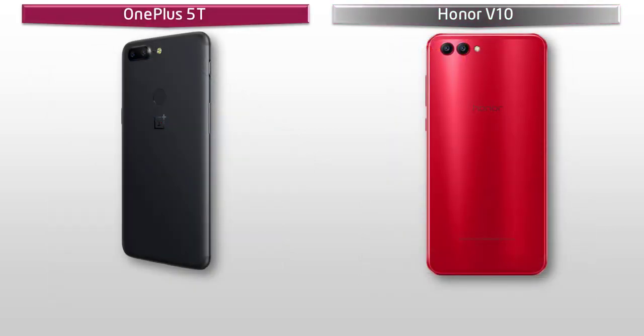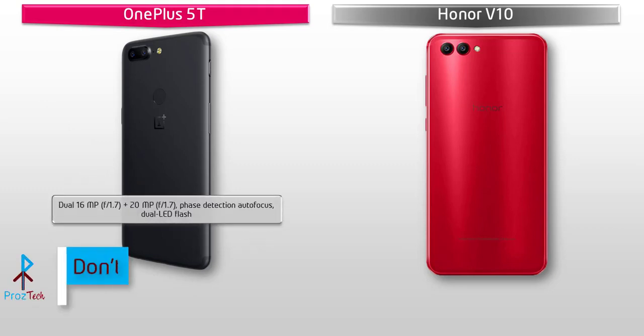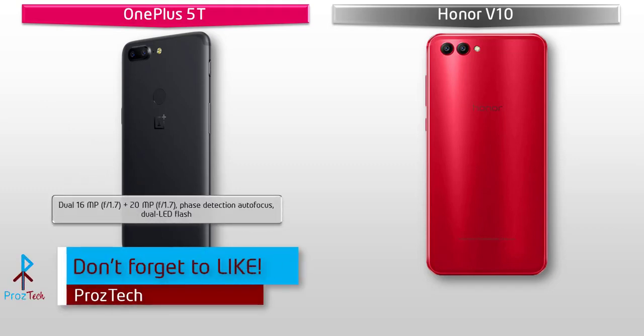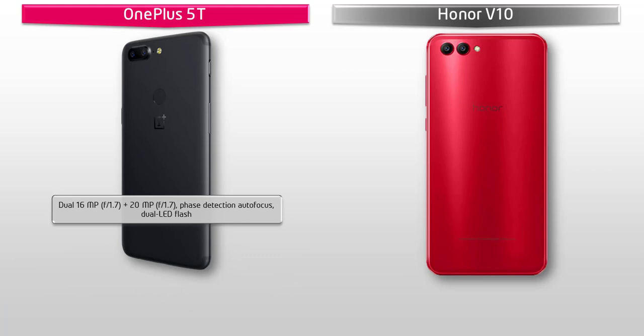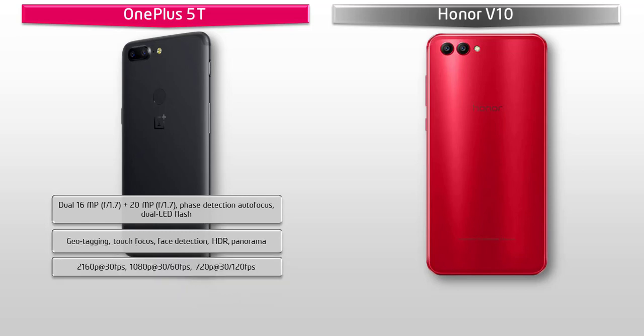About the camera, the OnePlus 5T comes with a 16 megapixels plus 20 megapixels Sony primary camera with f/1.7 aperture, autofocus, and dual LED flash, 1.6x optical zoom, geotagging, touch focus, face detection, panorama, and HDR. It can shoot video at 2160p at 30 fps, 1080p at 30 and 60 fps, and 720p at 30 and 120 fps. The OnePlus 5T also comes with a secondary Sony camera of 16 megapixels with f/2.0 aperture and 1080p video recording with auto HDR.